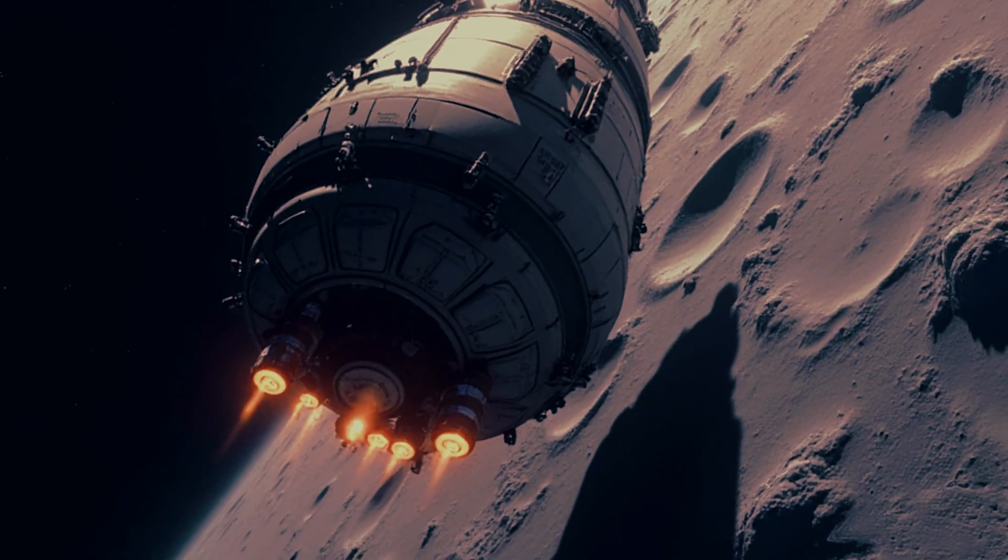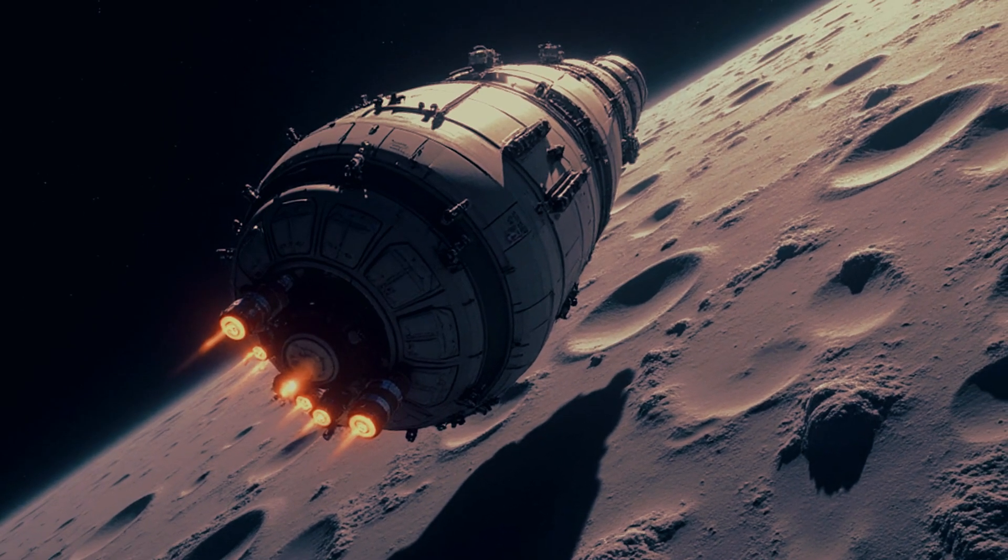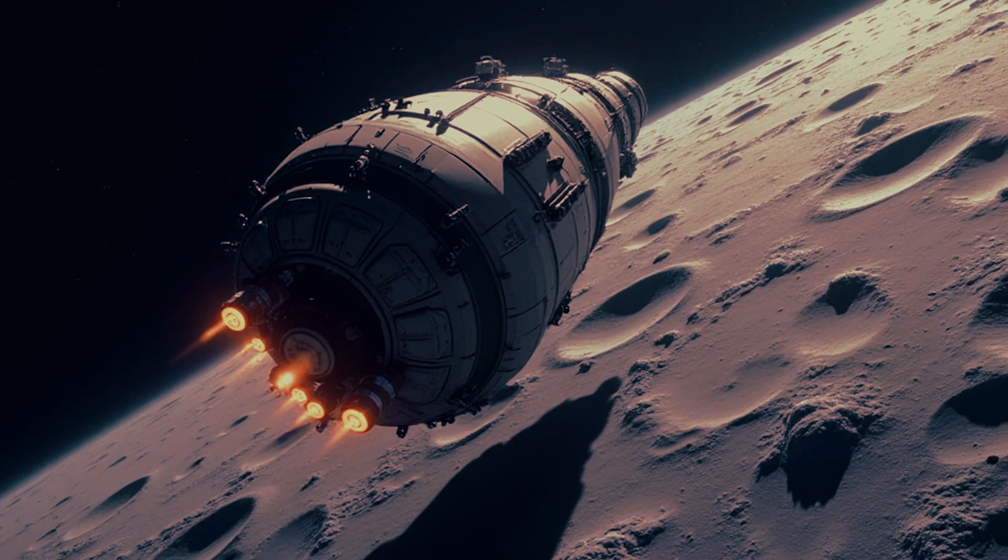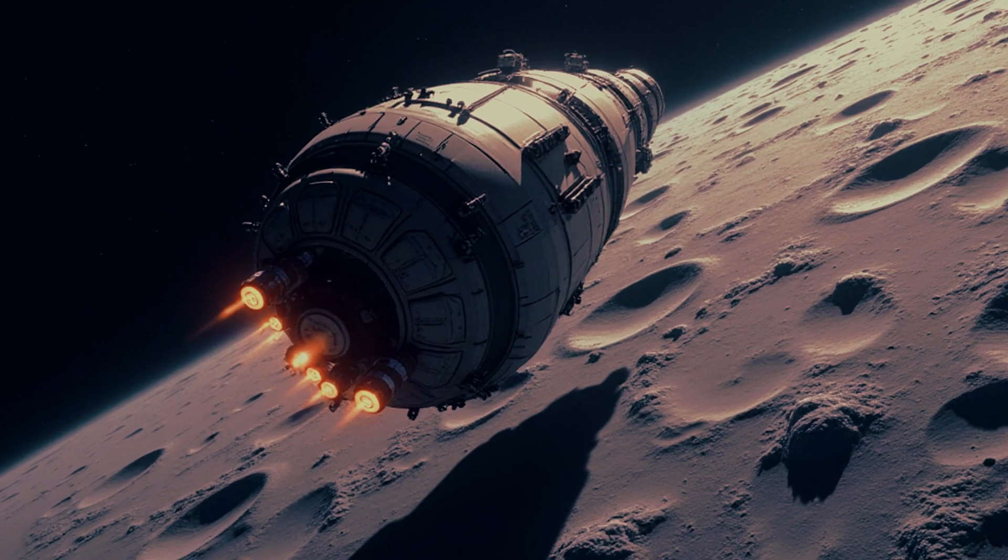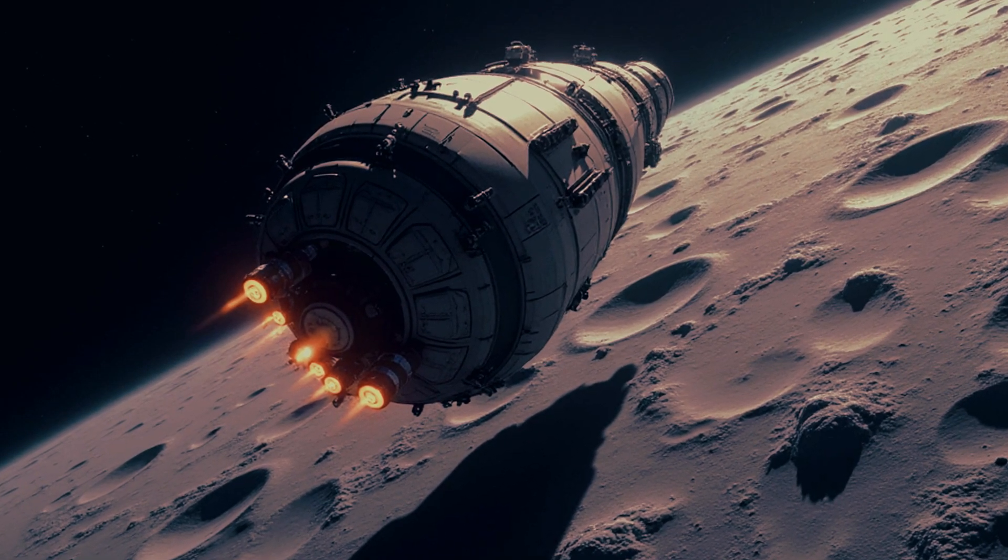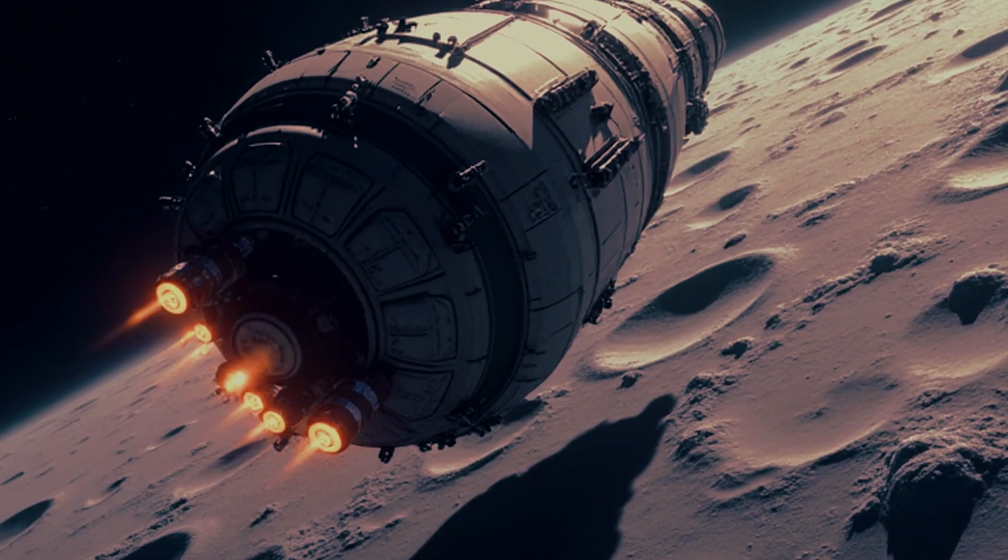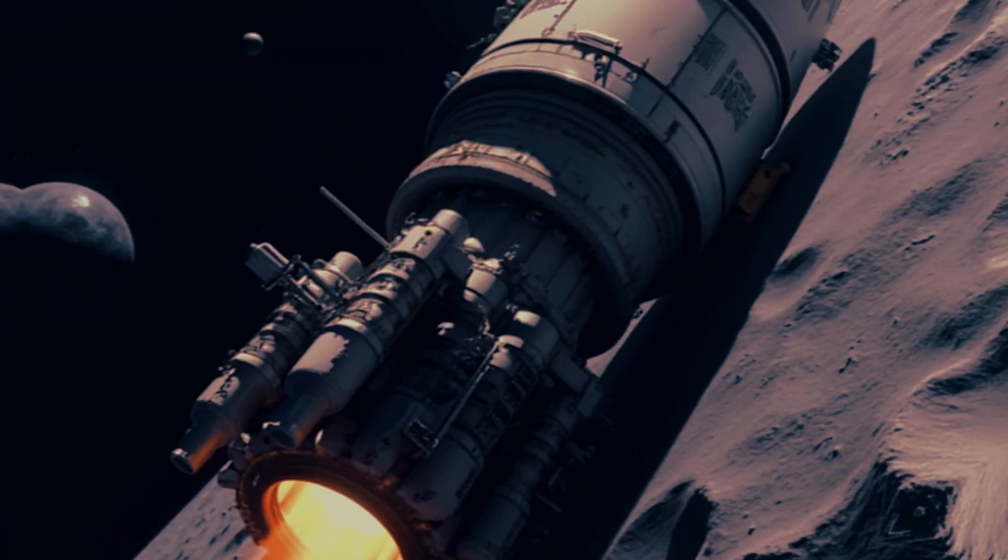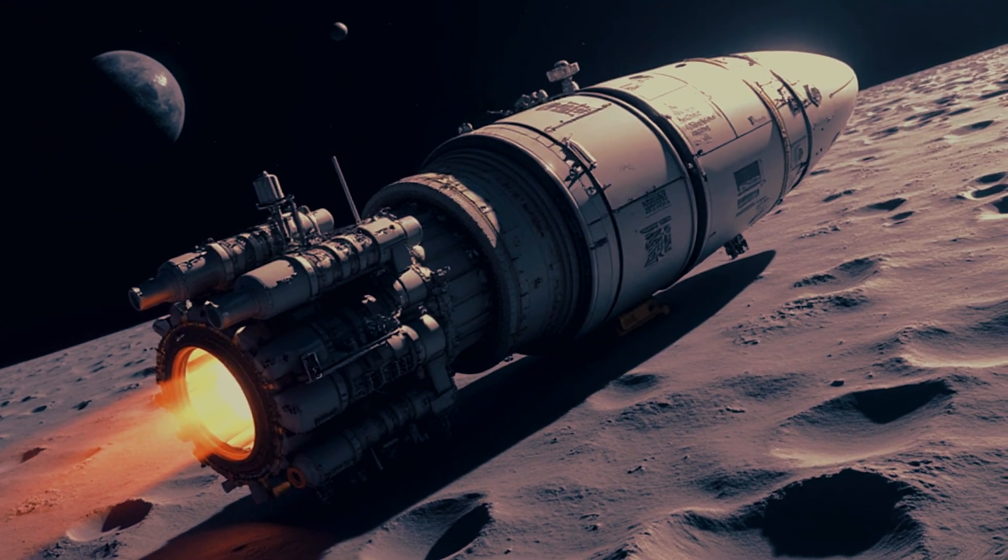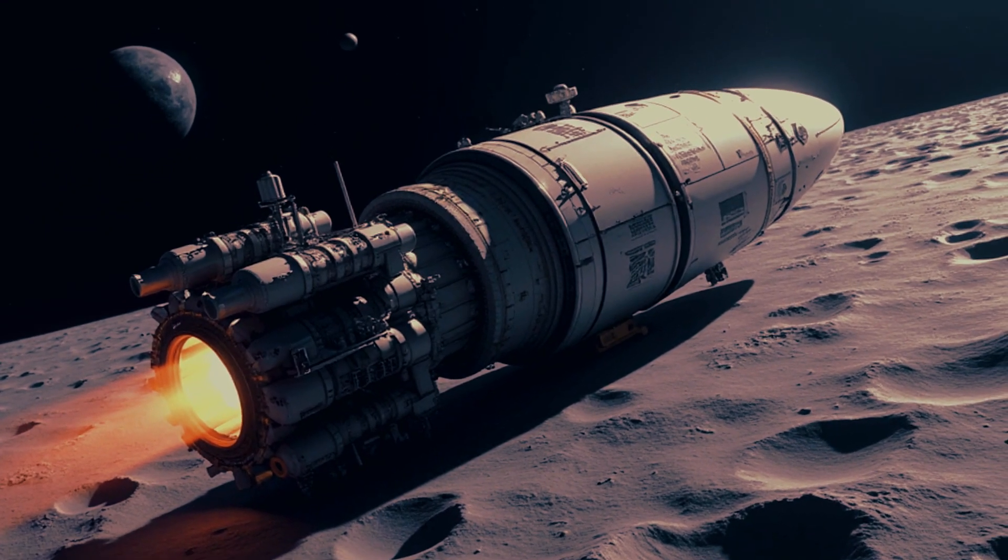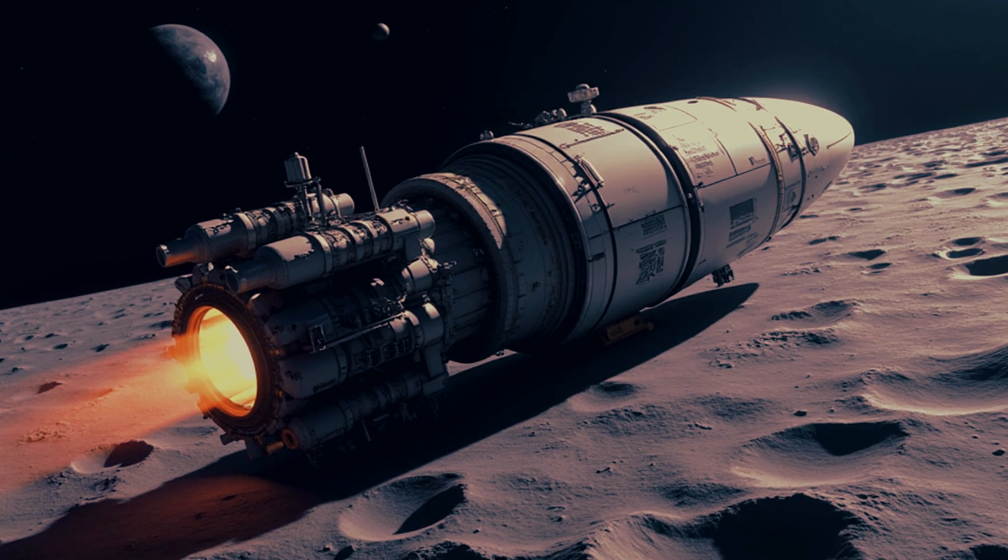And it's not just planets and stars. In the quantum world, everything spins too, just in a way that defies logic. Electrons, for example, have a property called spin, as if they were tiny whirlpools of pure energy. You can't see the spin, but its effects are very real. It creates magnetic fields, drives chemical reactions, and influences how matter behaves. Even our brains rely on it. It's as if we're all connected to the universe through this invisible spin.